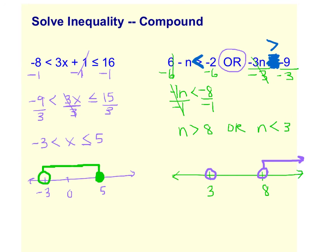It also says that N is less than 3. So we're going to shade to the left because those are all the values that are less than 3. And that's what your OR inequalities will look like. So and inequalities shade in toward each other or inequalities will shade out.